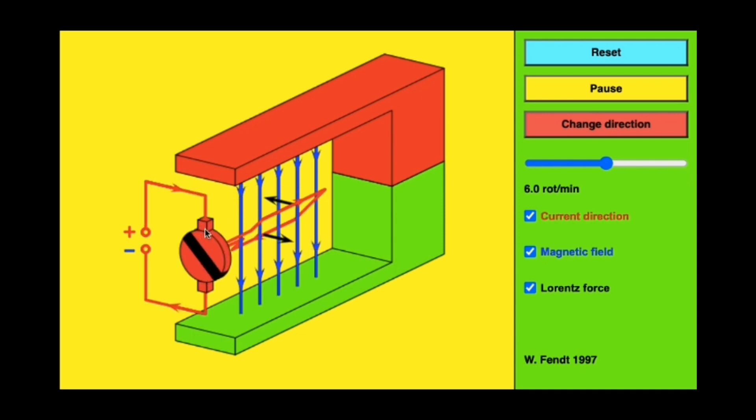The carbon brushes are used to maintain contact between the internal and external circuit while there is rotation taking place. As we can see, the purpose of the split ring is to convert the direct current in the external circuit into alternating current in the internal circuit.